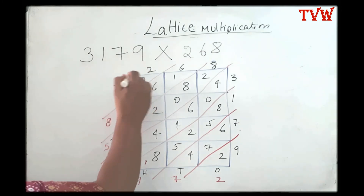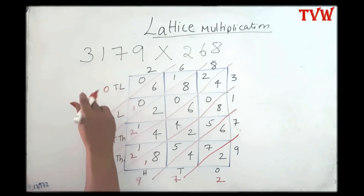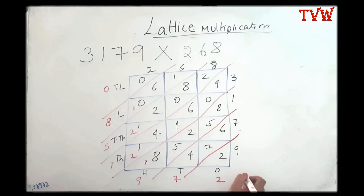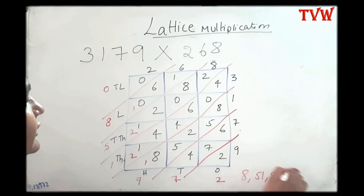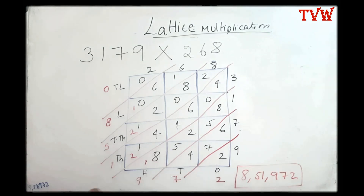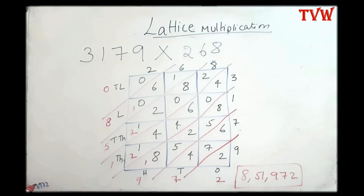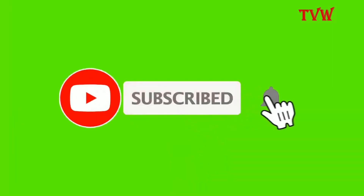Here there is only zero, so you don't have to read this — you can start reading from here: eight lakhs fifty-one thousand nine hundred and seventy-two. We got the same answer when we had four columns and three rows as well. I hope you all understood this lattice multiplication. Watch my other videos, and if you like it please share and subscribe to my channel. Thank you.